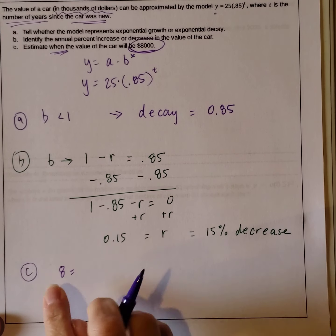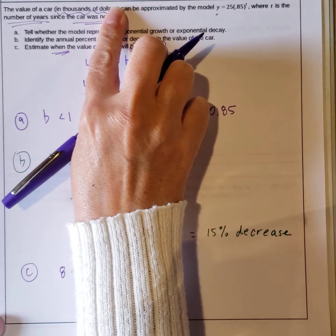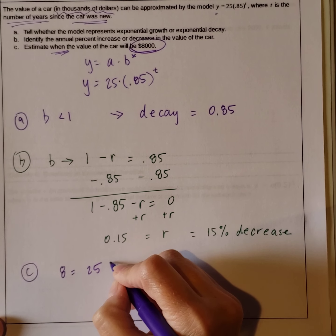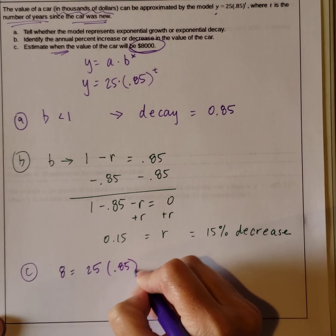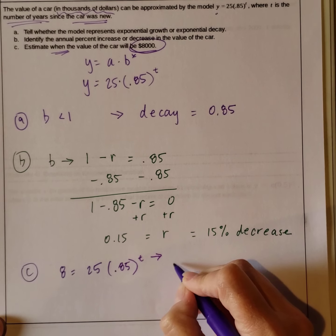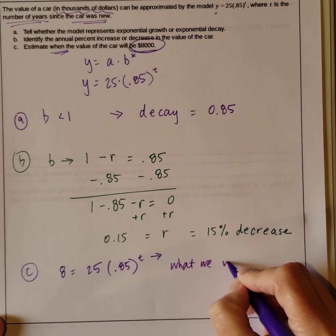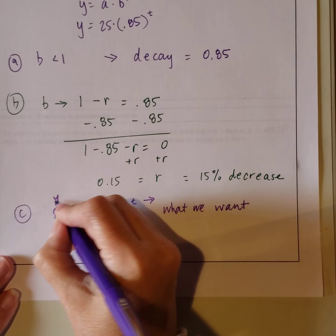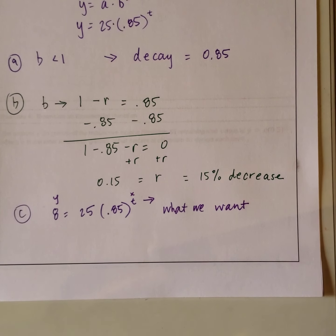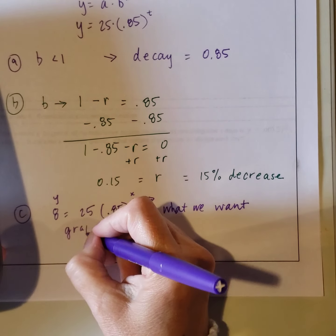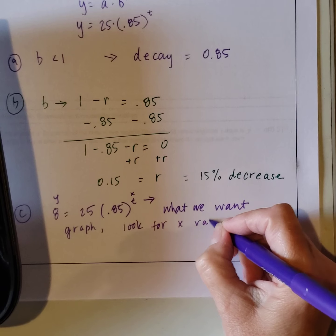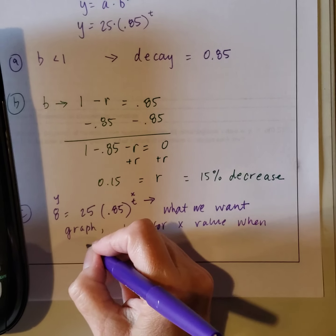So $8,000. So this is going to be set equal to 8, because this is the value of the car in thousands of dollars. So 8 equals 25 times .85 to the t. So this is what we're looking for. And this is also the t. This was our y. This is our x. So what we can do is graph it and look for x value when y equals 8.